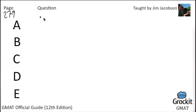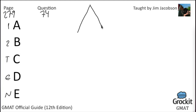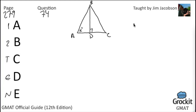Still page 279, question number 74: What is the area of triangular region ABC? Diagrams are useful here. The area of a triangle equals one-half the base times the height. That's all we can determine without the statements.